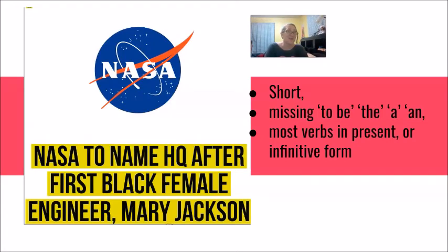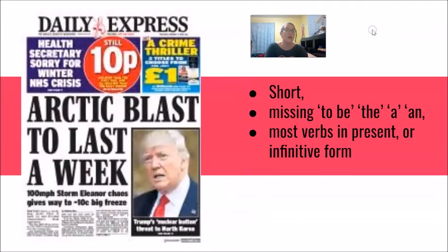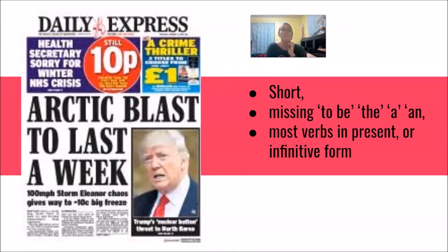The headline from my student's example: 'NASA to name HQ headquarters after first black female engineer, Mary Jackson.' 'NASA to name' means 'NASA will name their headquarters.' And another example: 'Arctic blast to last a week.' If you don't have experience with North Dakota or Minnesota weather, an Arctic blast is terrible — negative 10, negative 15, negative 25 Celsius. So 'this weather will last a week' becomes 'Arctic blast to last a week.'